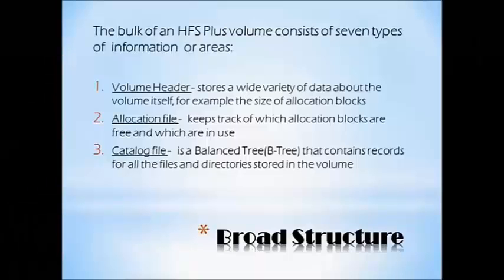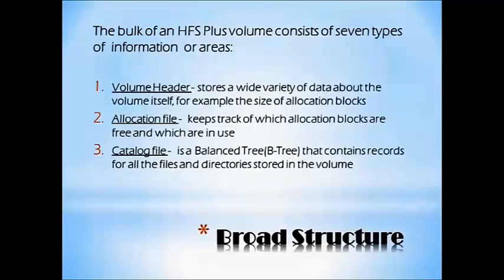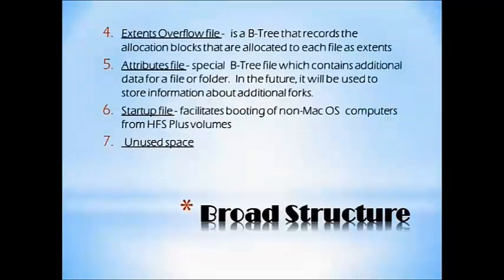The broad structure of an HFS Plus volume consists of 7 types of information or areas. First is the Volume Header, which stores a wide variety of data about the volume itself, such as the size of allocation blocks. Second is the Allocation File, which tracks which allocation blocks are free and which are in use. Third is the Catalog File, which is a balanced tree (B-tree) that contains records for all the files and directories stored in the volume. Fourth is the Extents Overflow File, which is a B-tree that records the allocation blocks allocated to each file as extents.